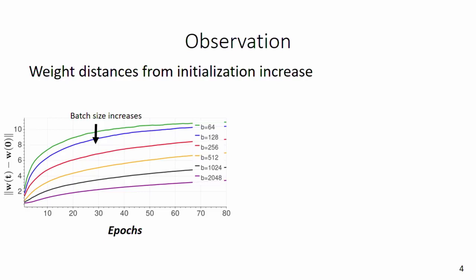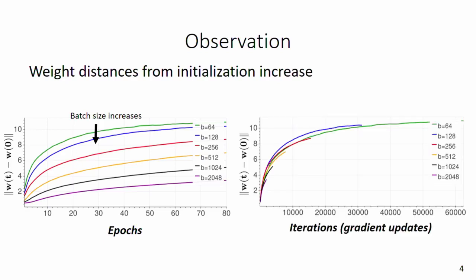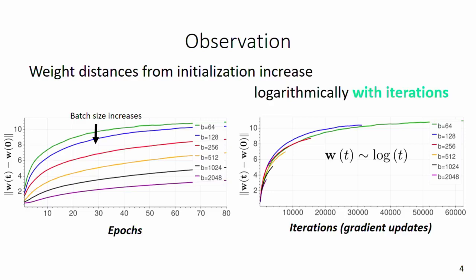Since validation error plateaued and training error decayed near zero, we searched for another state variable to inform us of the learning dynamics. We measured the distance traversed by weights over the course of training and found that small batch training reached a significantly larger distance from initialization compared to large batch — a batch size of 64 reached a distance almost four times larger than with a batch of 2048. Since the curves had a suspiciously similar shape, we changed the x-axis from epochs to SGD iterations. This caused an approximate data collapse where all curves fell nearly on top of each other, revealing a universal logarithmic curve, and this observation helped us close the generalization gap.